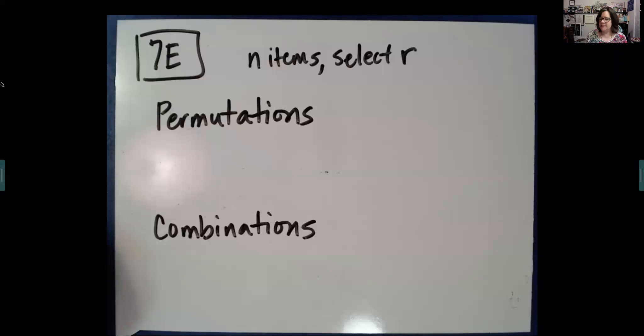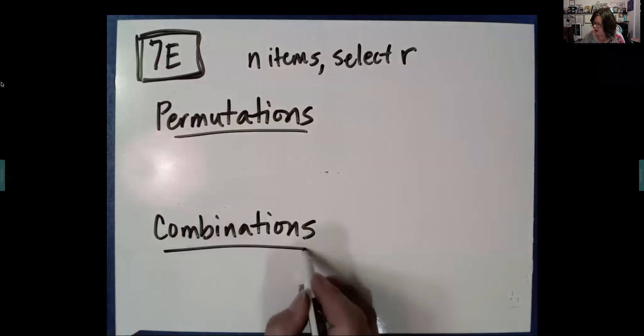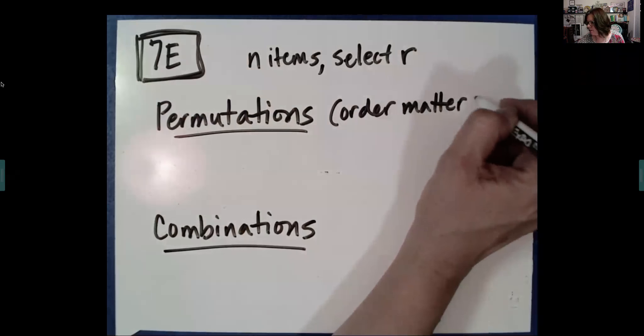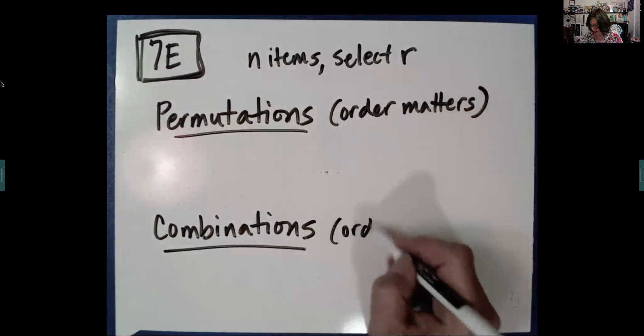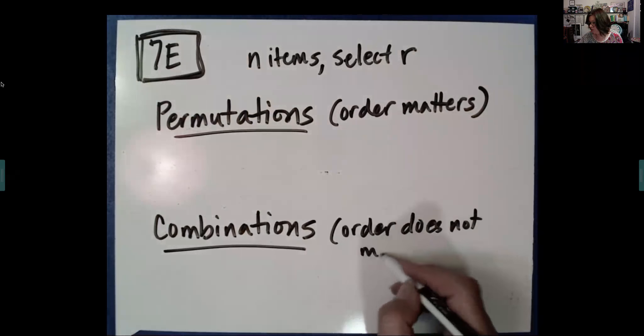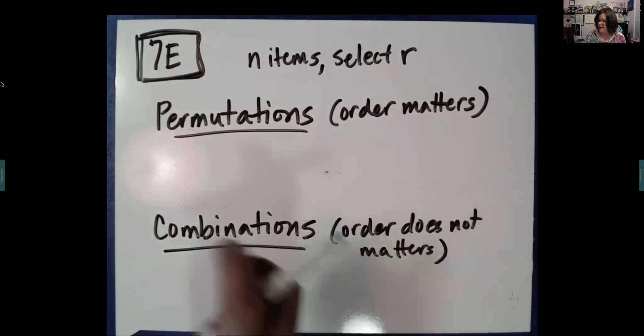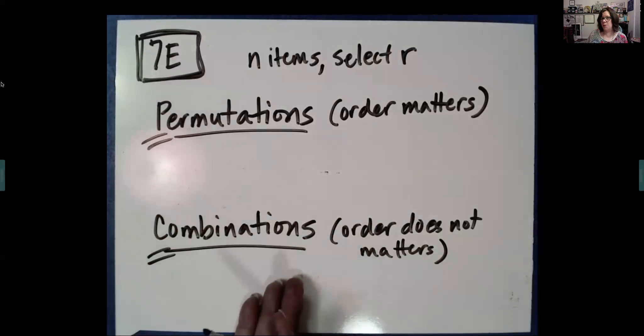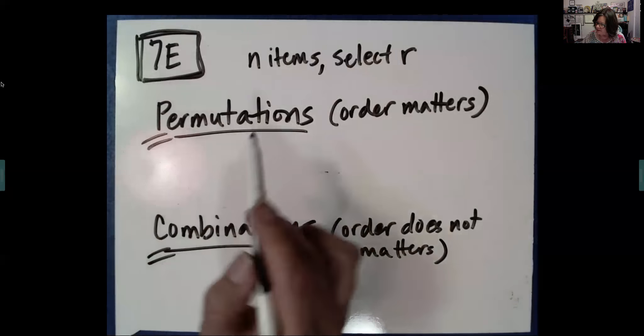Okay. Our last section, 7E. This is a really important section. We got permutations and combinations. Permutation, order matters. Combinations, the order doesn't matter. And the example that I think is helpful for remembering these words is that permutations is like electing president, vice president. Combinations is like electing a committee. Where here we might want five officers, but they have specific roles. Here we might want five people, but they don't, they're on a committee.